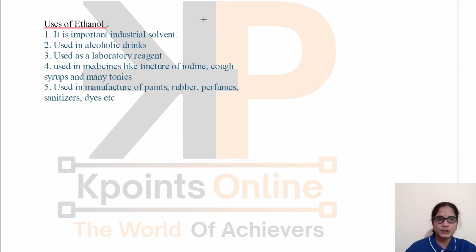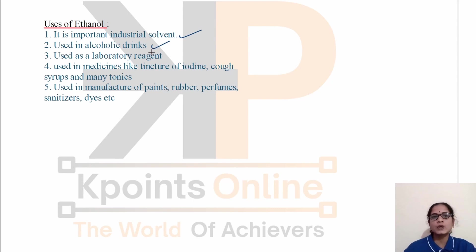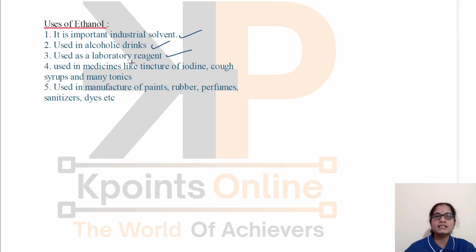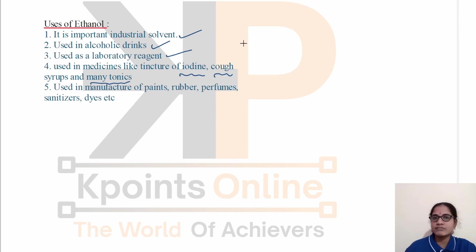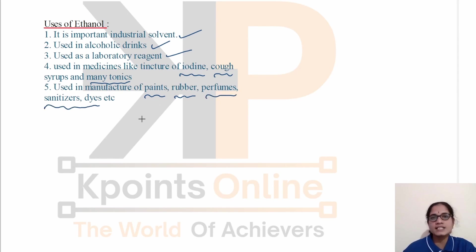The uses of ethanol include: it is an important industrial solvent, it is used in alcoholic drinks (in diluted form), it is used as a laboratory reagent, and it is used in medicines like tincture of iodine, cough syrups, and tonics. Cough syrups contain a small amount of ethanol, which is why we feel drowsy after taking them. Commercially, it is used in the manufacture of paints, rubber, perfumes, sanitizers, dyes, and many more products.